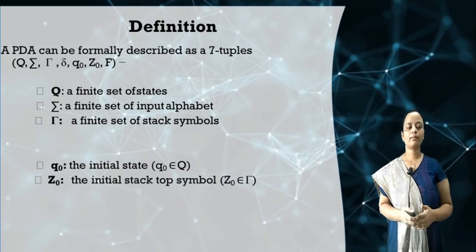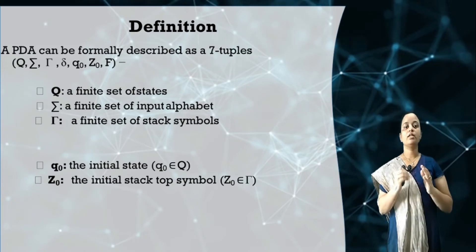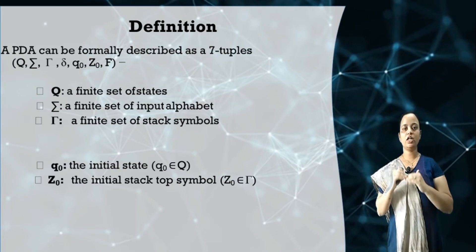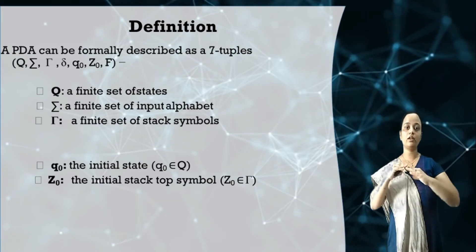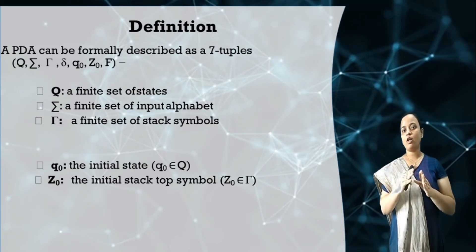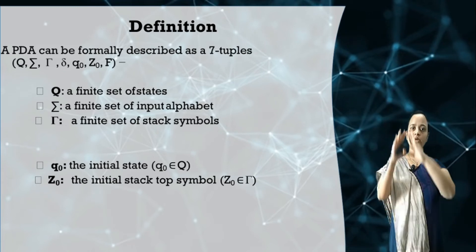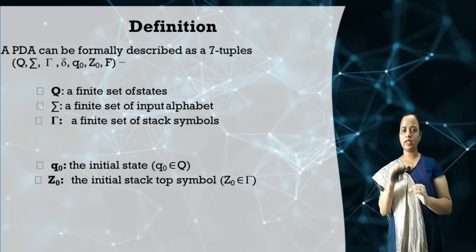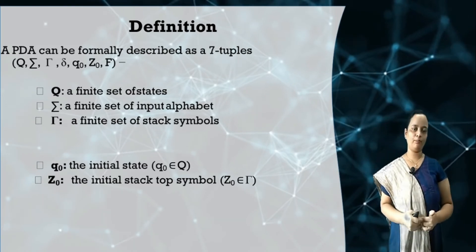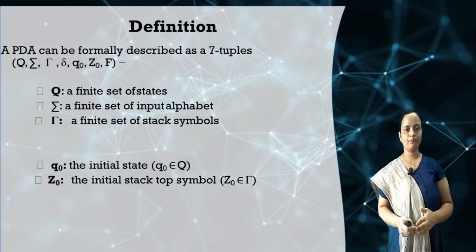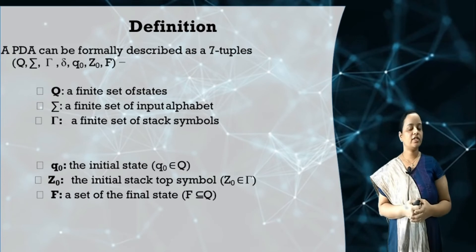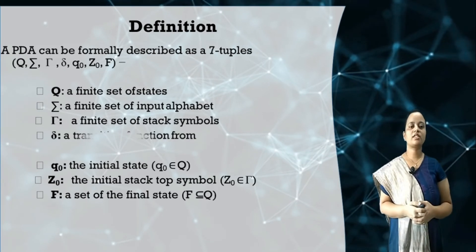Z0 defines the initial stack symbol — the initial top-most stack symbol, representing the initialization of the stack. Always remember: the bottom of the stack always contains Z0, so even if the stack is empty it always contains the symbol Z0. Z0 is included in Tau because it is a stack symbol. F is the set of final states, which is always a subset of Q.